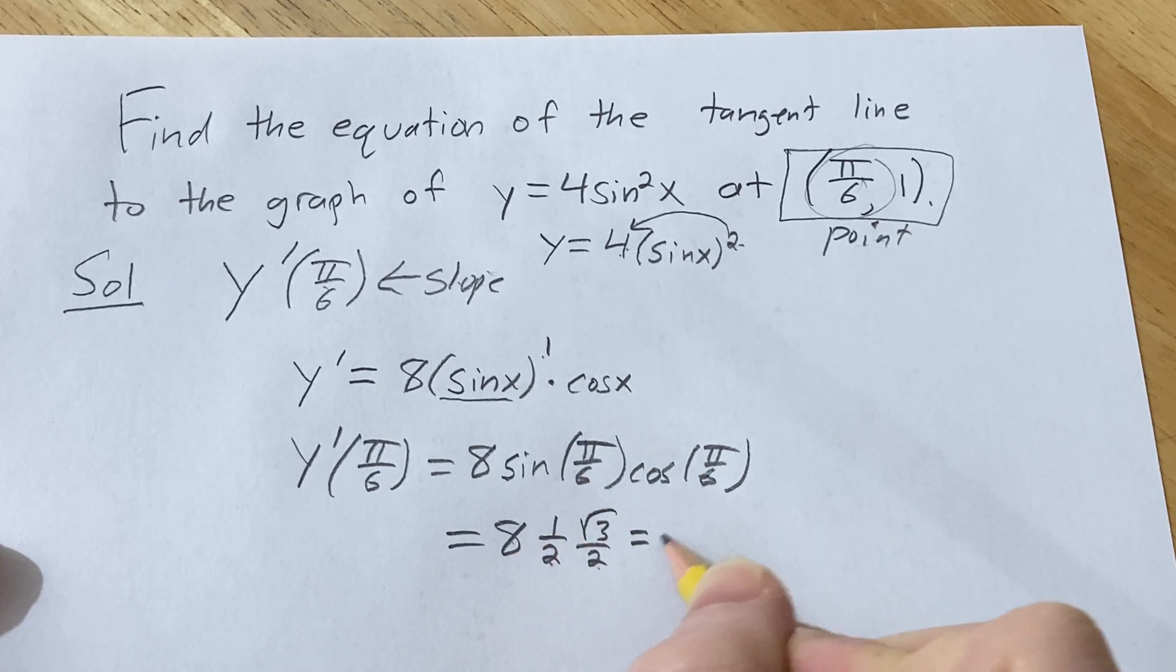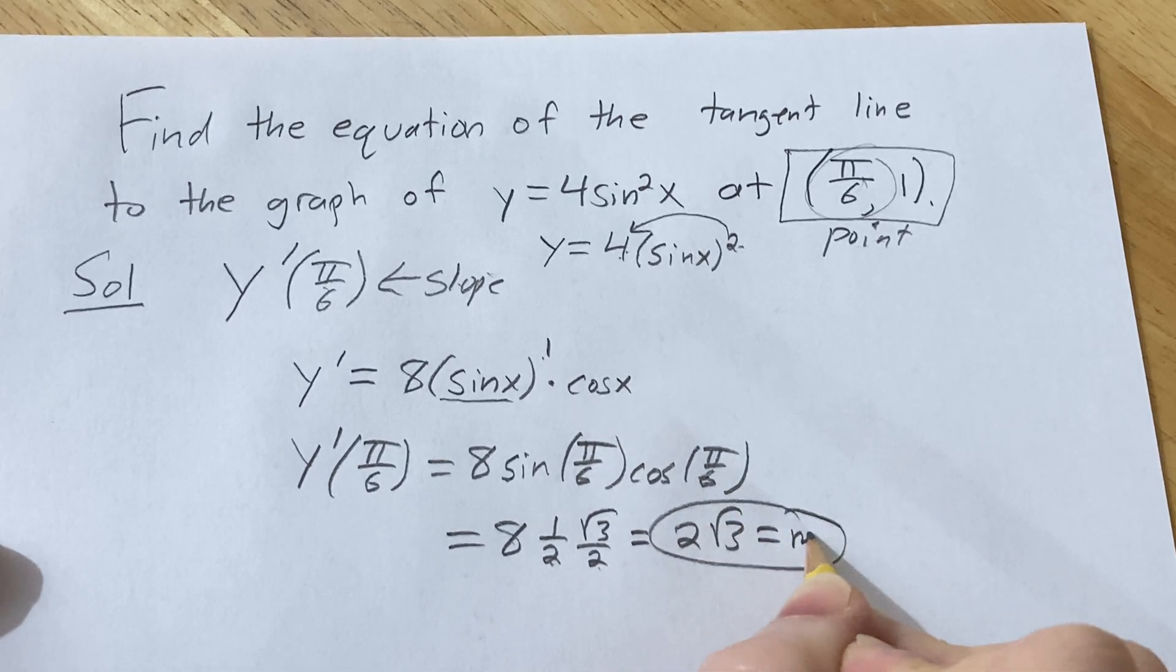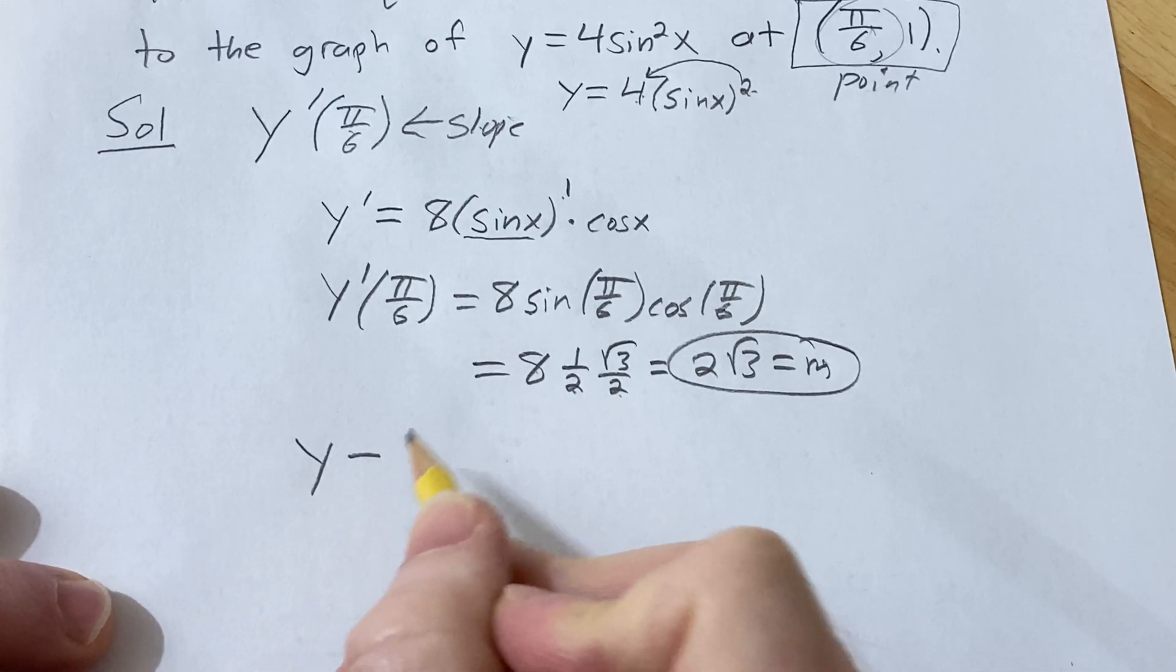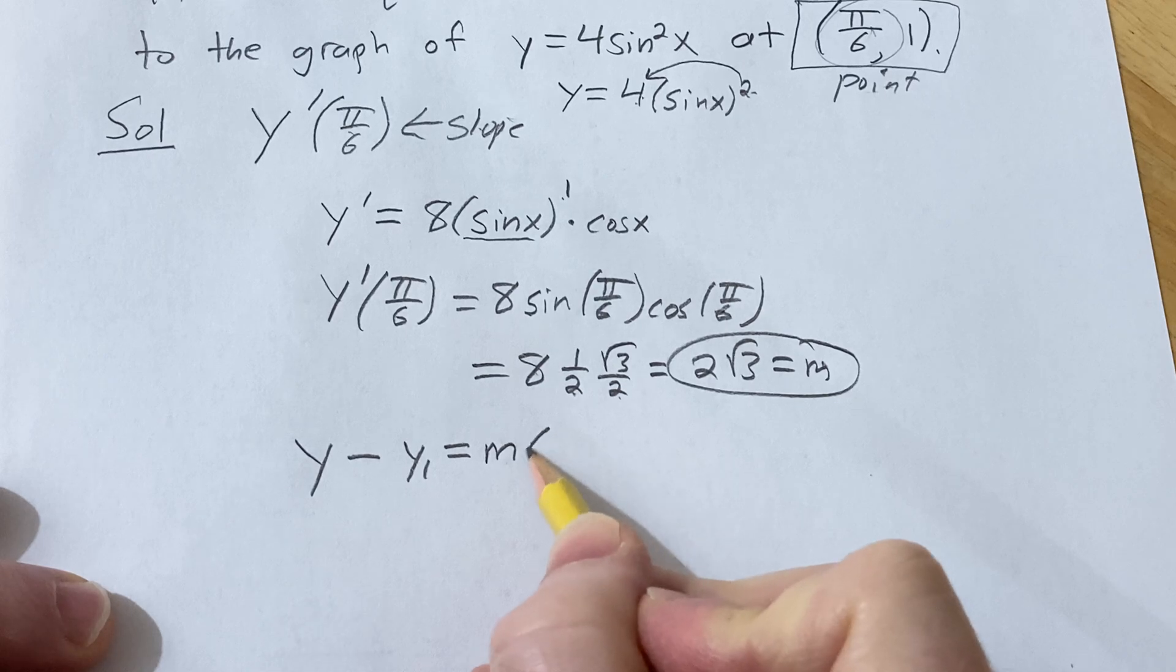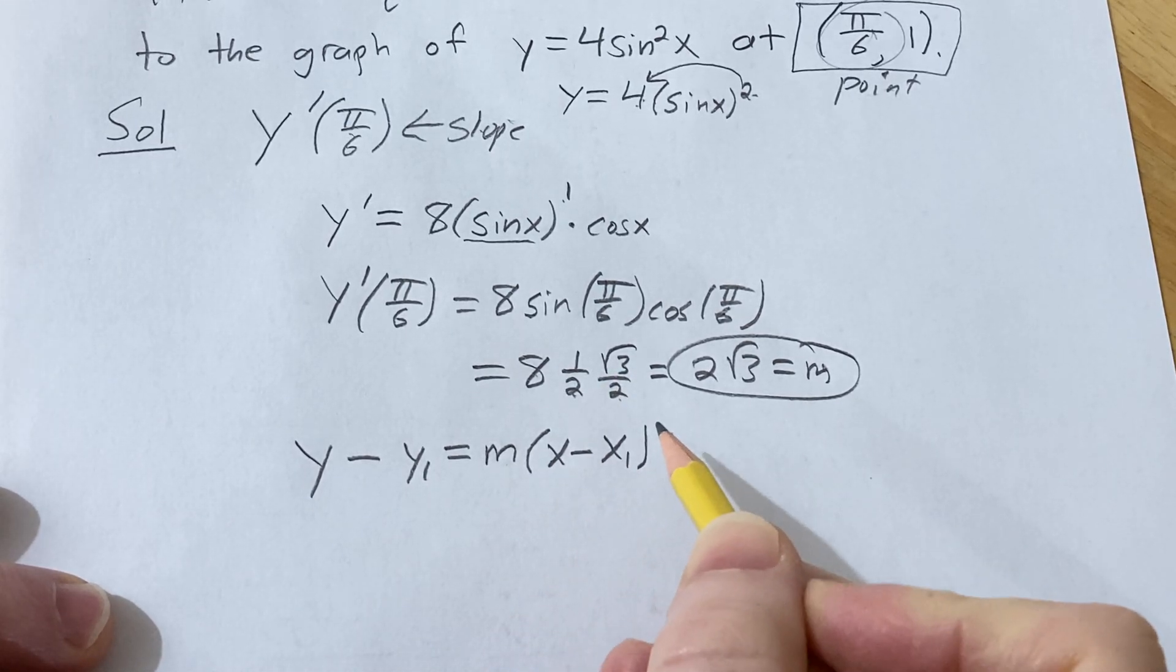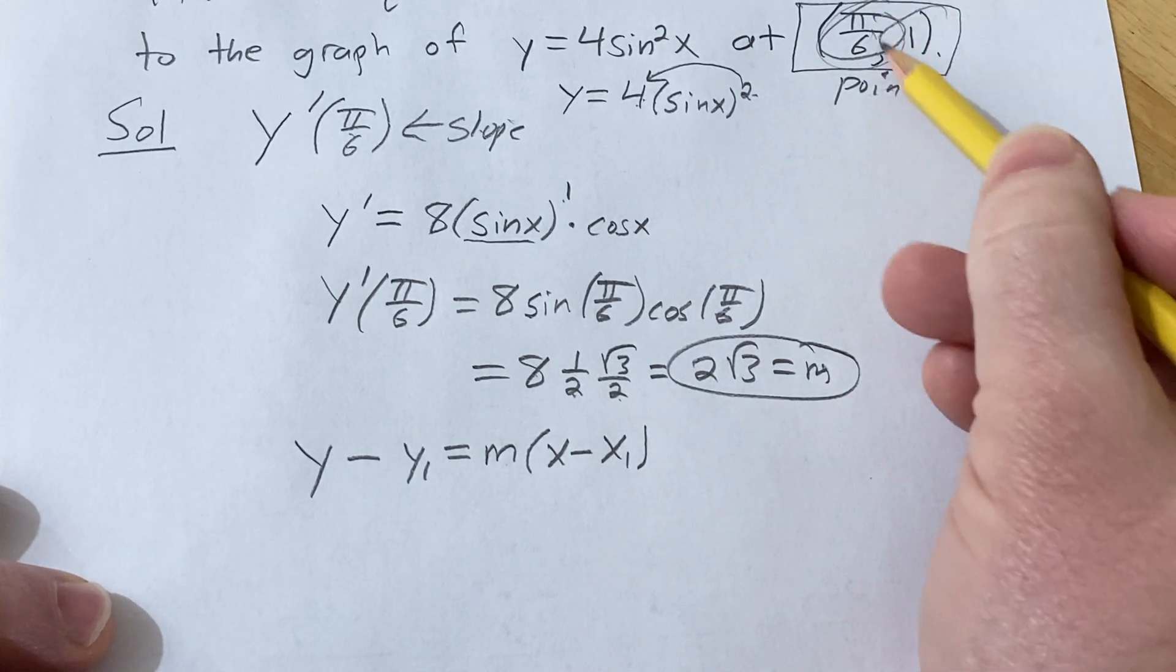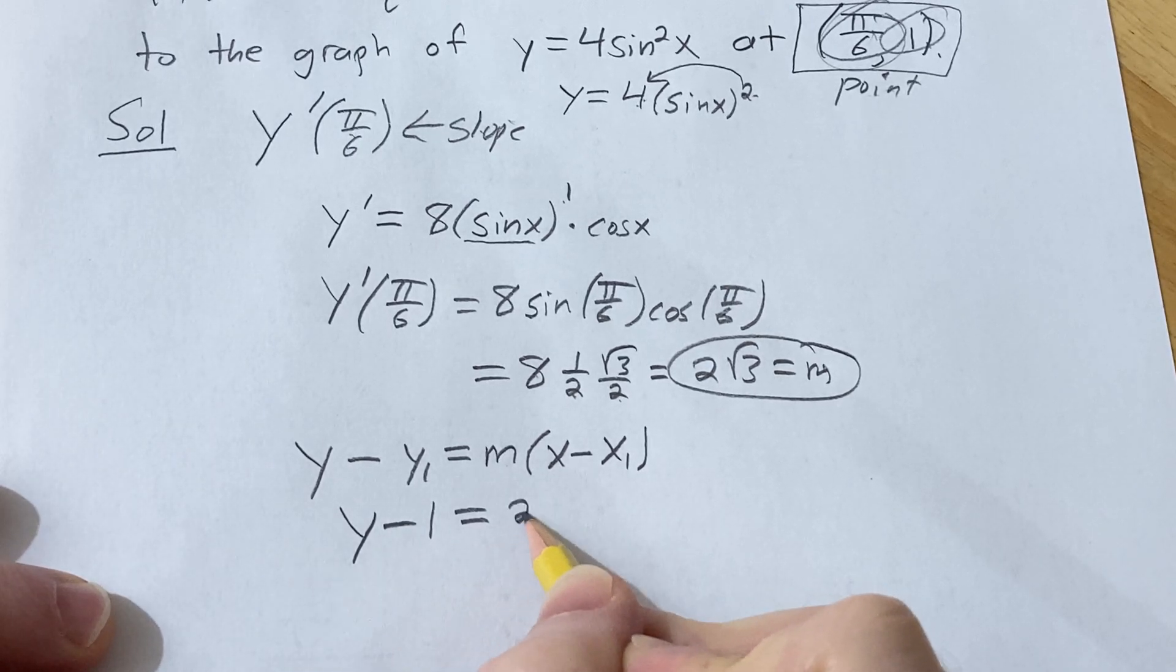2 times 2 is 4, goes into 8 twice, so you get 2√3. That's our slope. Now we use the point-slope formula, which is y - y₁ = m(x - x₁). In our particular problem, x₁ is π/6, y₁ is 1. So it's y - 1 = 2